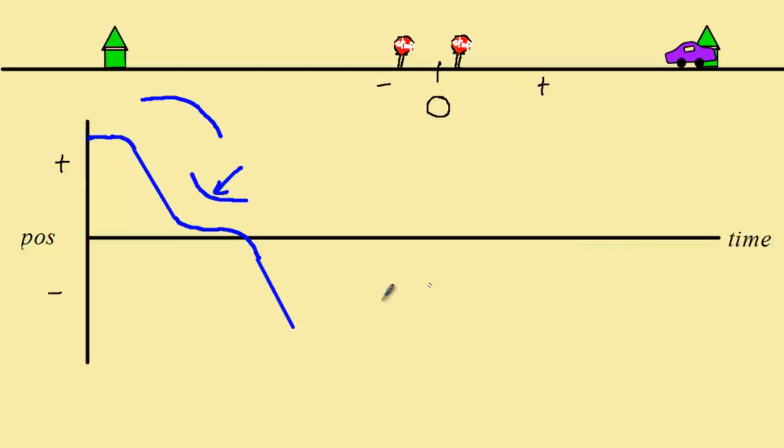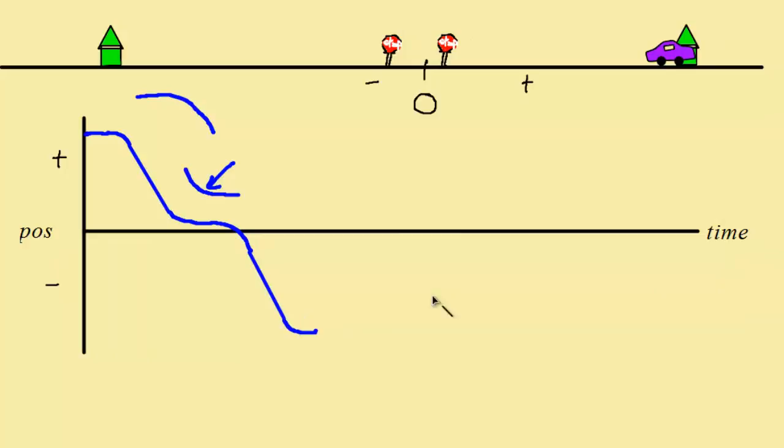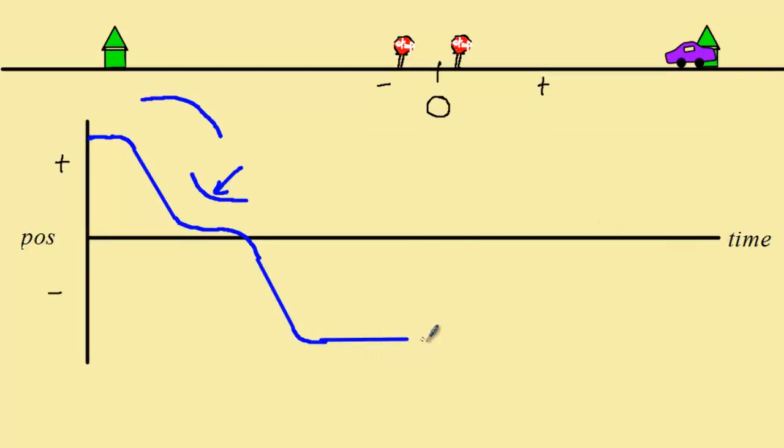When we get close to our friend's house, then once again we have to slow down, so we're going to have a curve there. Then we stay at our friend's house for some period of time. I hope this is starting to make some sense.